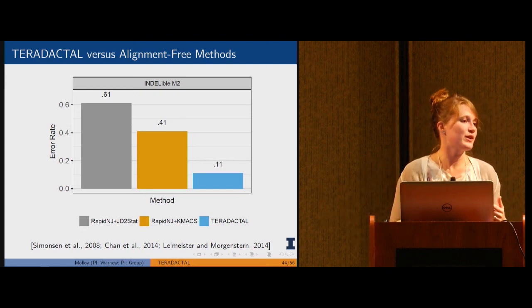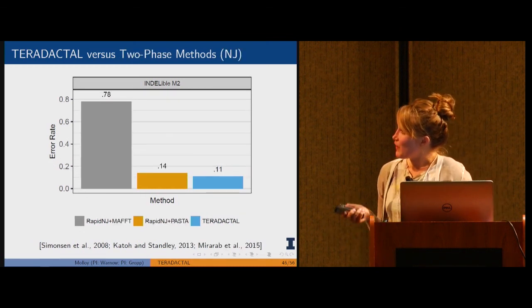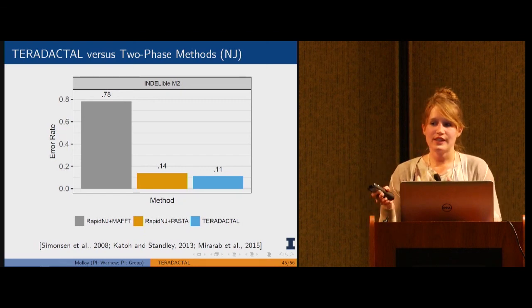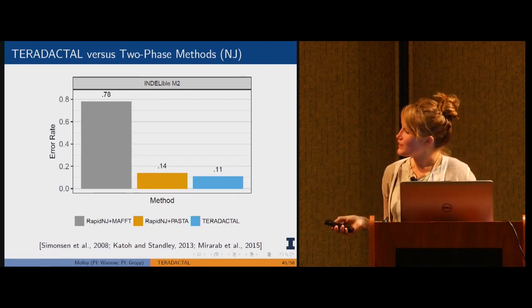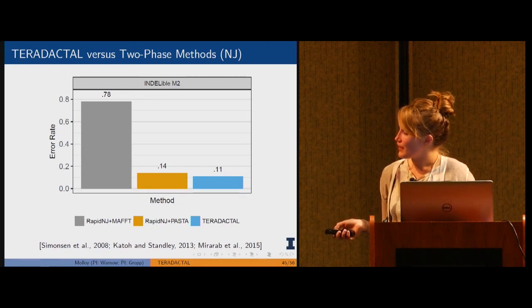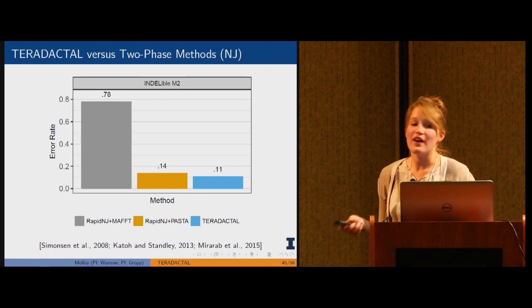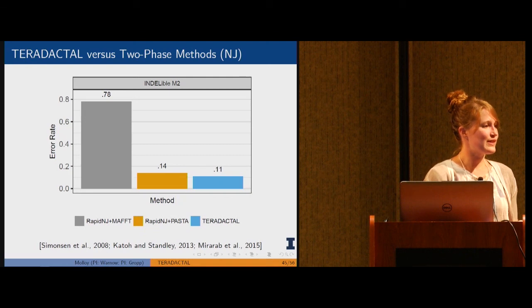We compare pterodactyl to two-phase methods. This method takes a multiple sequence alignment, uses it to get a distance matrix, and then runs a distance method. It's important to note that these are both the same distance method but they're using different input multiple sequence alignments, one from MAFFT and one from PASTA. You can see how much that input alignment affects things.